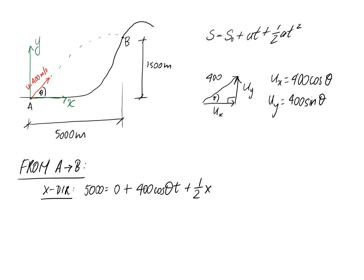So half times zero times t squared all goes away. We're left with an equation where 5000 equals 400 cos theta T. We have two unknowns in that equation: theta and T.